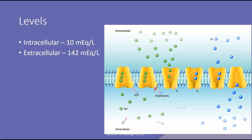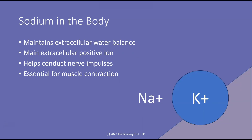How does that happen? We have these sodium-potassium pumps that move sodium and potassium into the right proportions. If we have an extracellular sodium value of 142 — that's in our normal range for sodium in the bloodstream — we'll end up having an intracellular sodium level of 10 milliequivalents per liter. There's a dramatic difference between intracellular and extracellular sodium, controlled by this sodium-potassium pump. Sodium maintains our extracellular water balance, is the main extracellular positive ion, helps conduct nerve impulses, and is essential for muscle contraction.